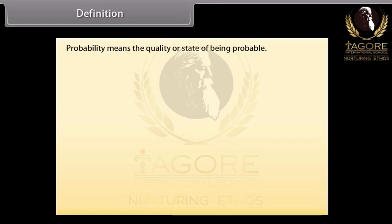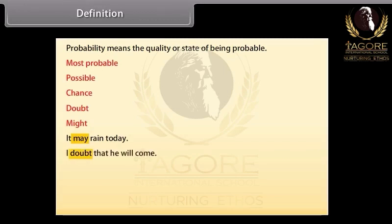In case of probability, we use the words most probable, possible, chance, doubt, might, etc. For example, it may rain today. The word may in the sentence shows probability. I doubt that he will come. Such words involve uncertainty.